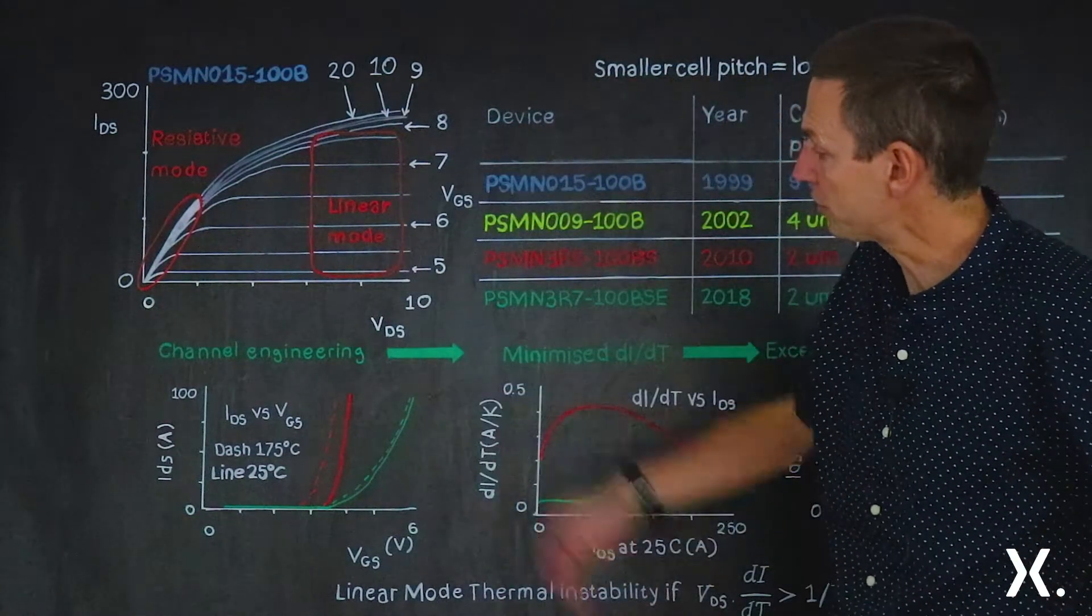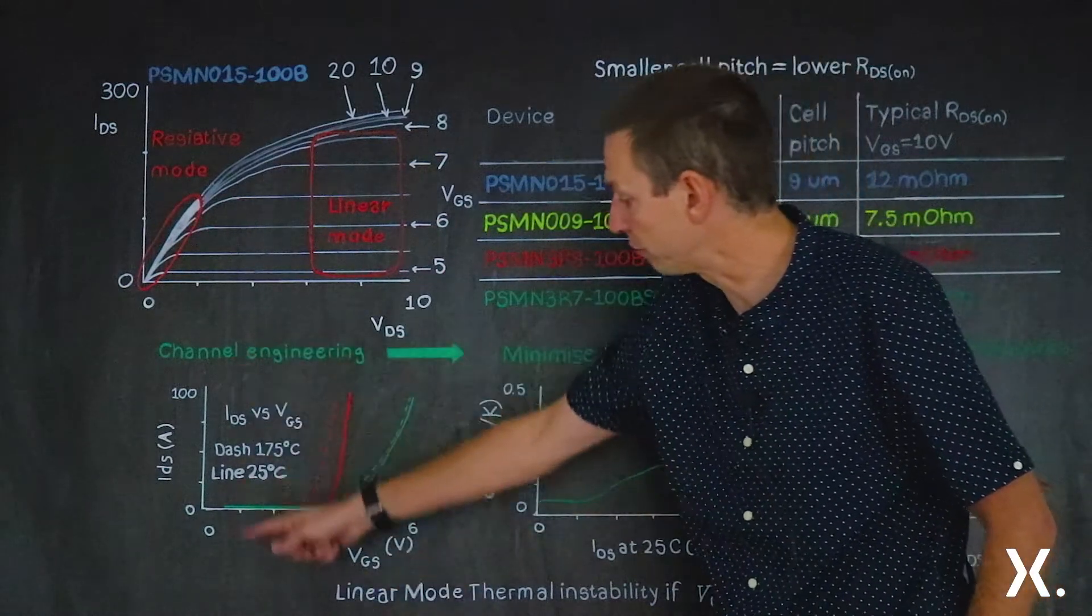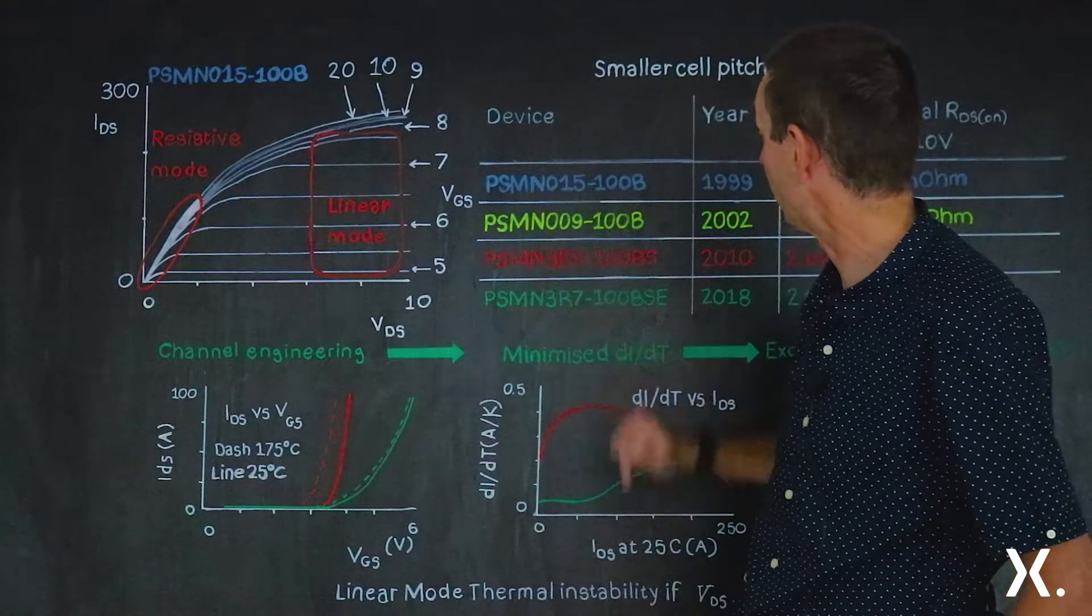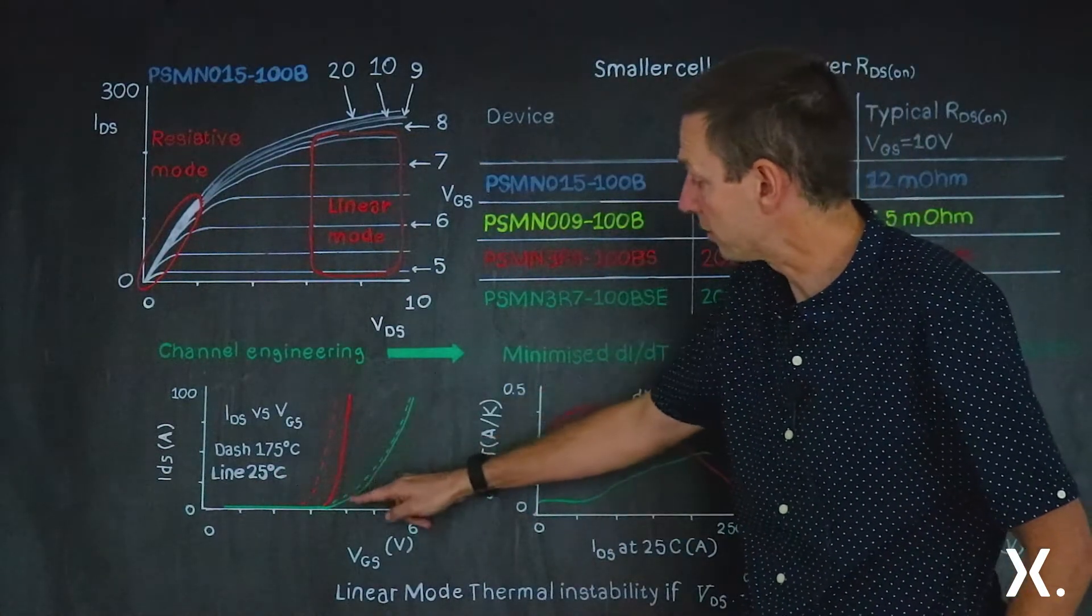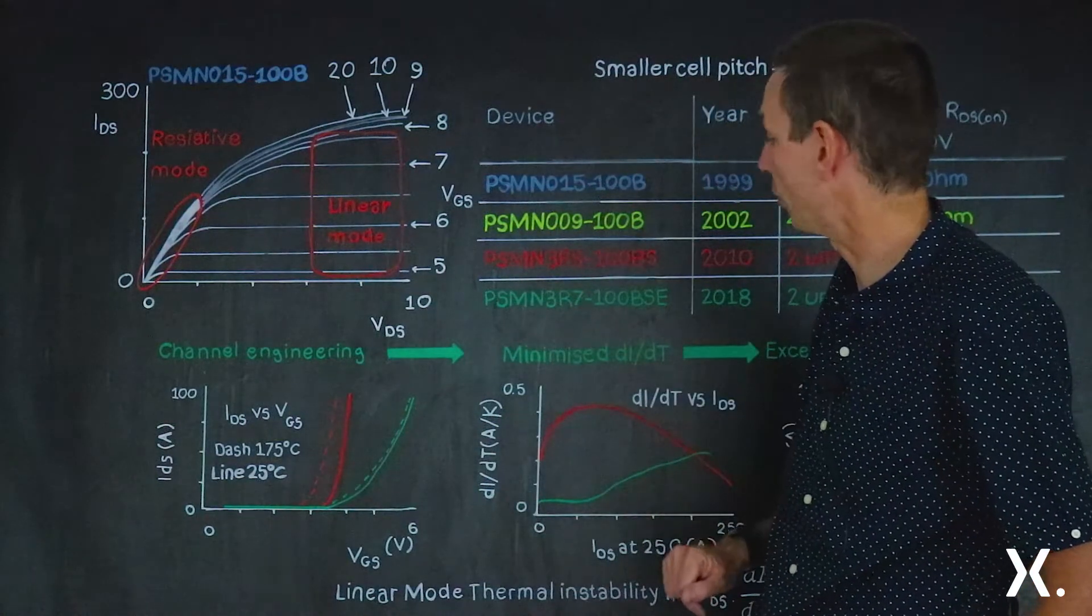So we'll take the same story. We'll consider, first of all, the transfer characteristics. On the transfer characteristic now, we've still got the source drain voltage against the gate bias. And we've got the characteristics for the two devices, the PSMN-3R8-100BSE and compared with it, this new device, the PSMN-3R7-100BSE.